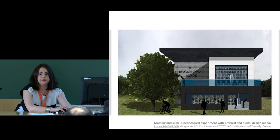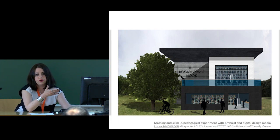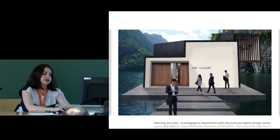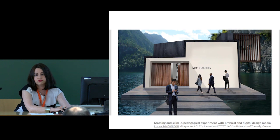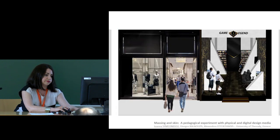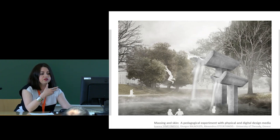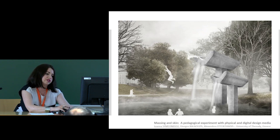These are some examples from the student projects. These images correspond to the polystyrene models you saw before. It's basically a 2D process applied to a photograph of a 3D object. It's interesting to see that some students also opted for a more atmospheric image by using these image editing tools.